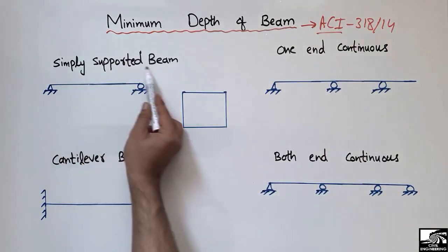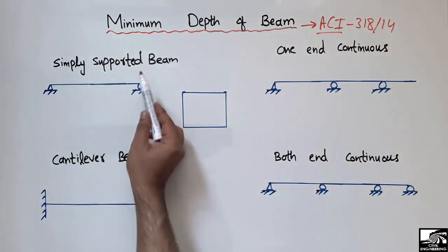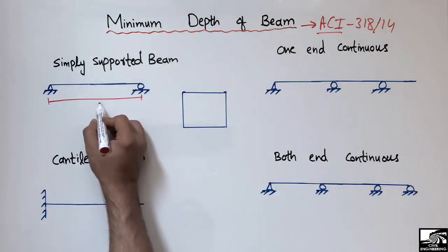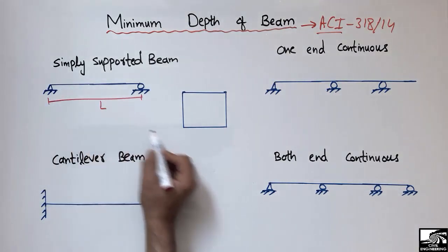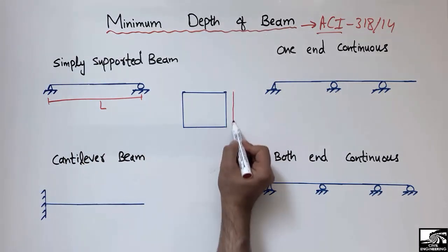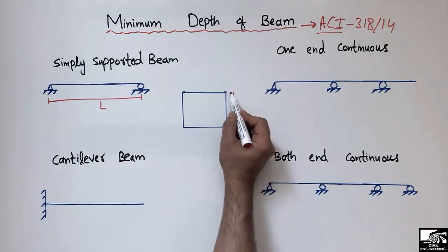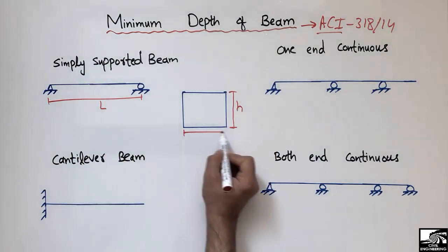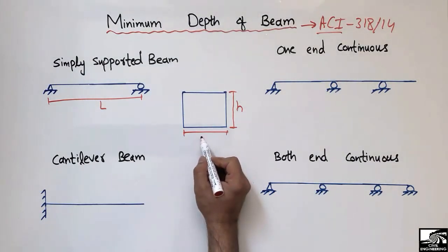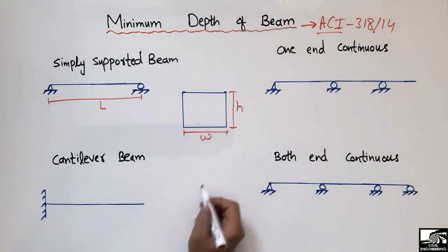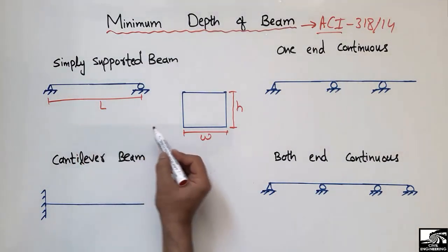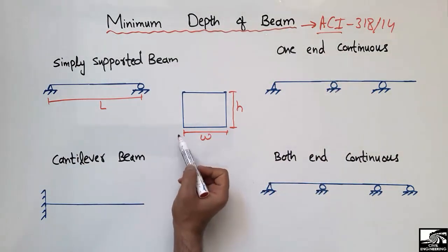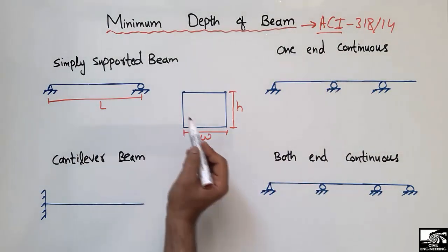Consider a simply supported beam with a given length. If we look at the cross-section of the beam, this is the height or thickness of the beam, and this is the width or breadth of the beam.